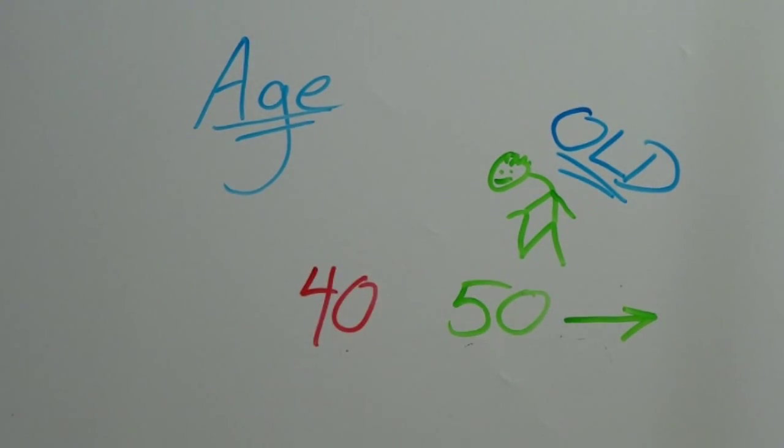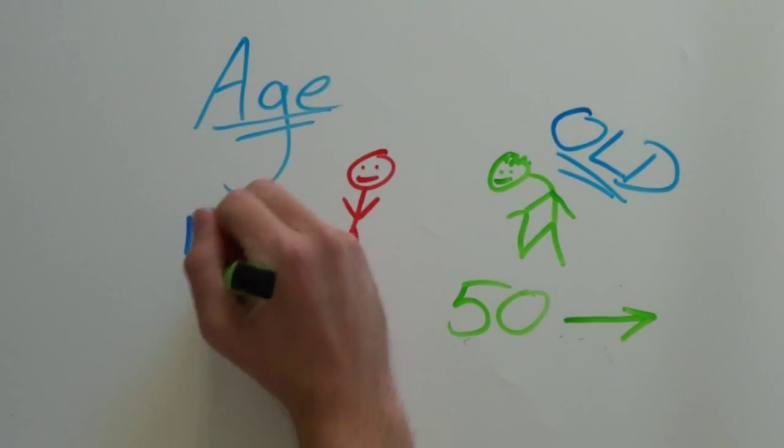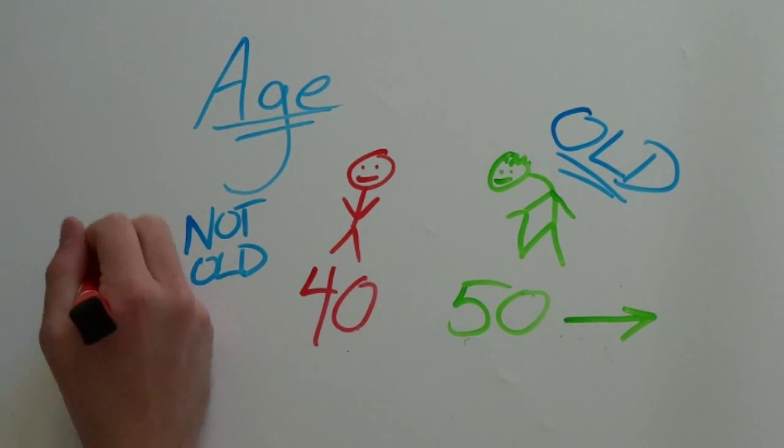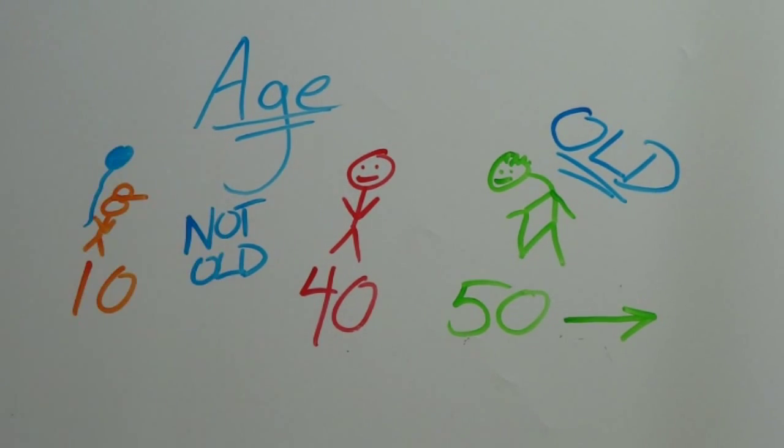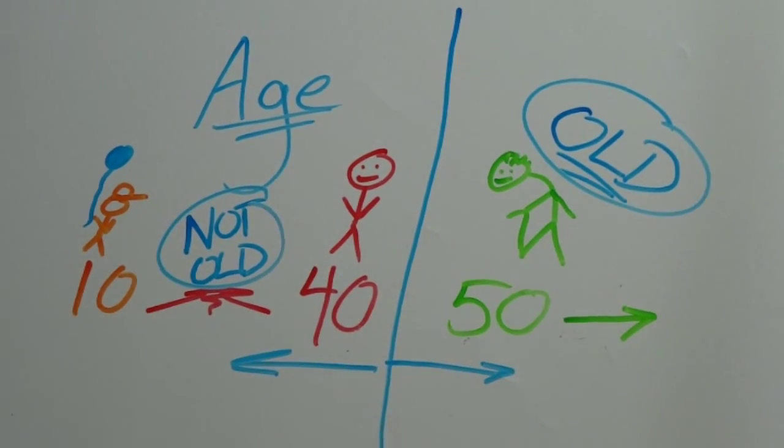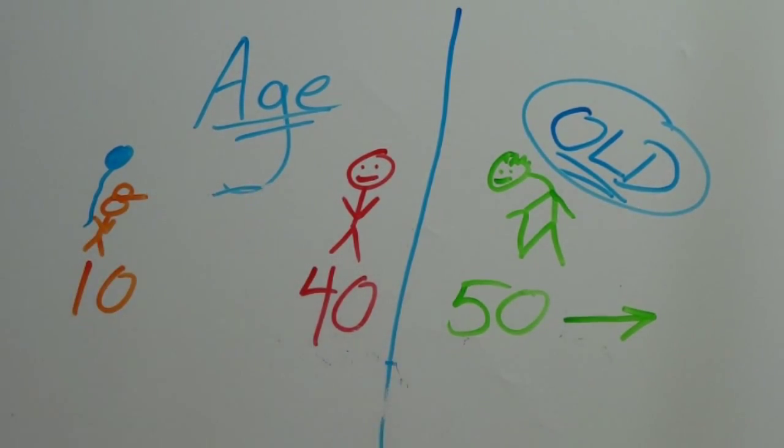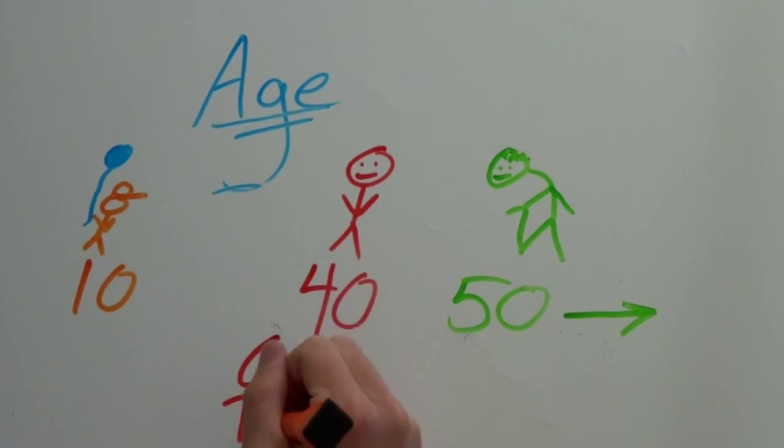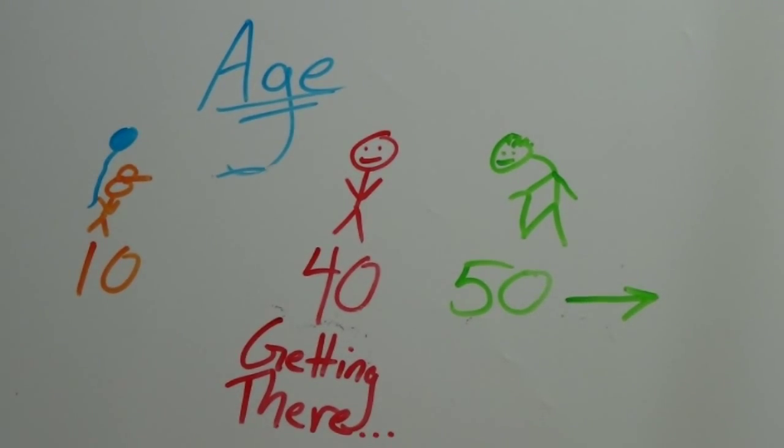If someone is 40 years old, then they don't meet the requirements or are in the not old category. A 10-year-old is also in the not old category. The 50-year-old requirement is a discrete boundary that distinguishes between the two classes, but to some people, 40 is considered old. They are partially old and probably have a monthly pass to hang out at the old people's club or wherever old people meet.